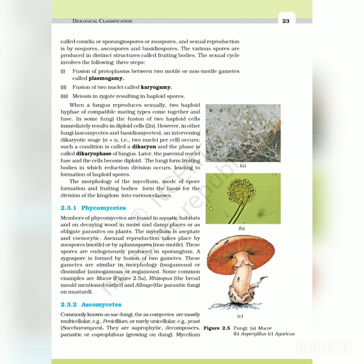The sexual cycle involves the following three steps: 1) Fusion of protoplasms between two motile or non-motile gametes, called plasmogamy; 2) Fusion of two nuclei, called karyogamy; 3) Meiosis in zygote resulting in haploid spores. When a fungus reproduces sexually, two haploid hyphae of compatible mating types come together and fuse. In some fungi, the fusion of two haploid cells immediately results in diploid cells (2N). However, in other fungi - ascomycetes and basidiomycetes - an intervening dikaryotic stage (N+N), i.e., two nuclei per cell, occurs. Such a condition is called dikaryon and the phase is called dikaryotic phase of fungus. Later, the parental nuclei fuse and the cells become diploid. The fungi form fruiting bodies in which reduction division occurs, leading to formation of haploid spores. The morphology of the mycelium, mode of spore formation and fruiting bodies form the basis for the division of the kingdom into various classes.